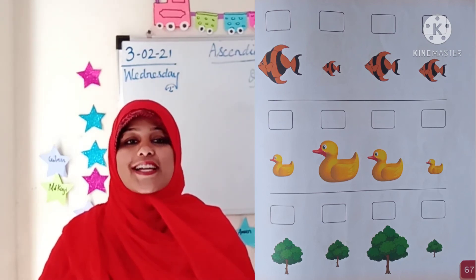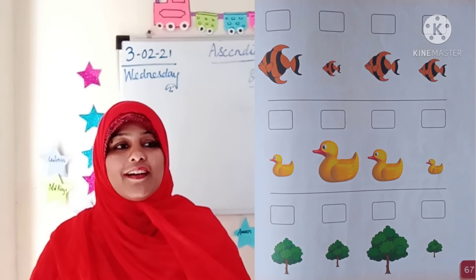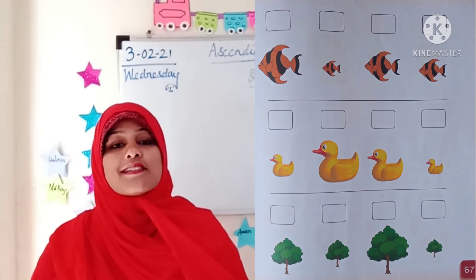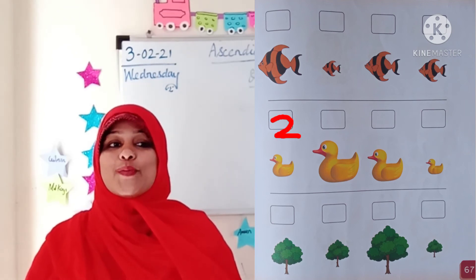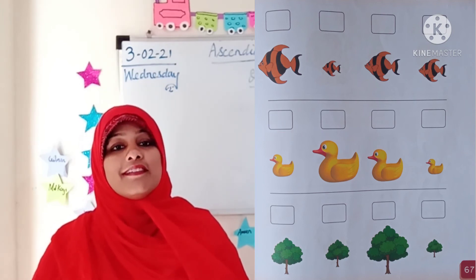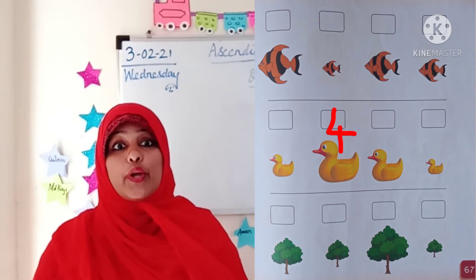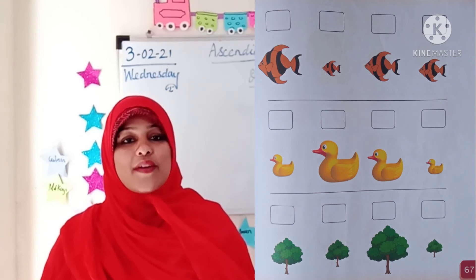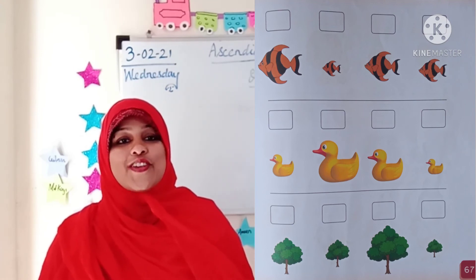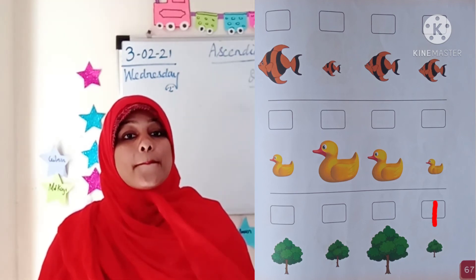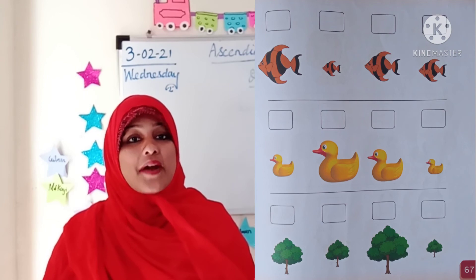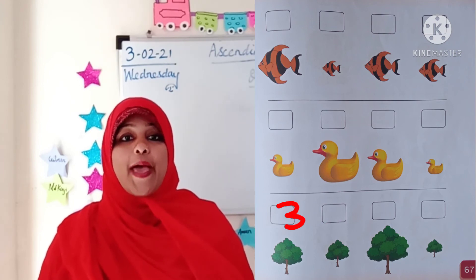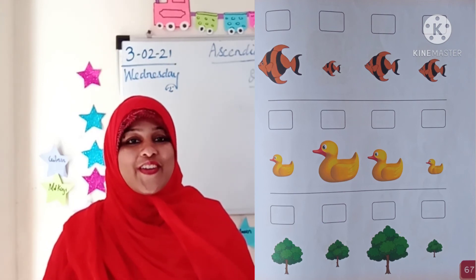Good job. Now let's move to the ducks. Which is the smallest and tiny duck over here? Yes, the last one — here we write number 1. A little more bigger — number 2. Then bigger — number 3. And the biggest duck — number 4. Now, which is the smallest tree over here? Yes, the last one — please write number 1. A little more bigger — number 2. Then a little bigger — number 3. And the biggest tree — number 4. Good job, my dear students.